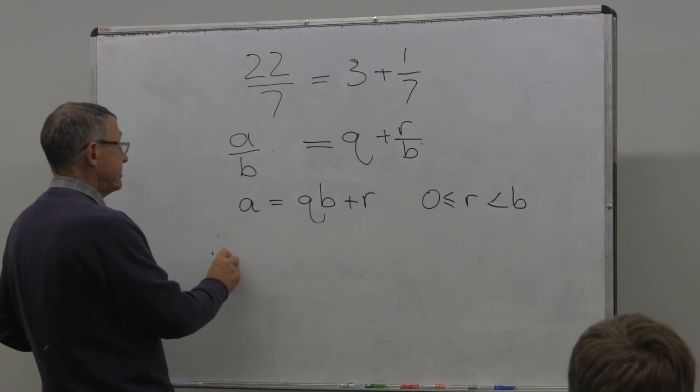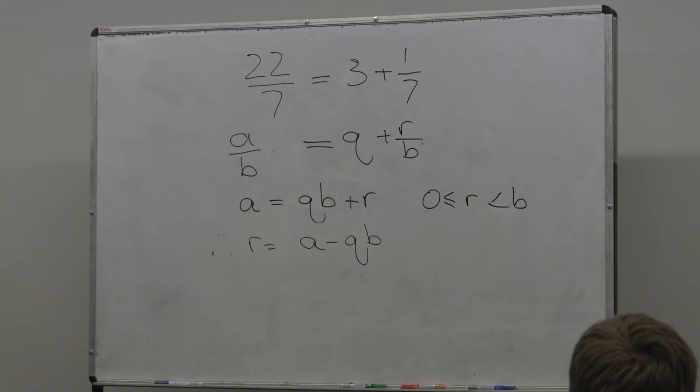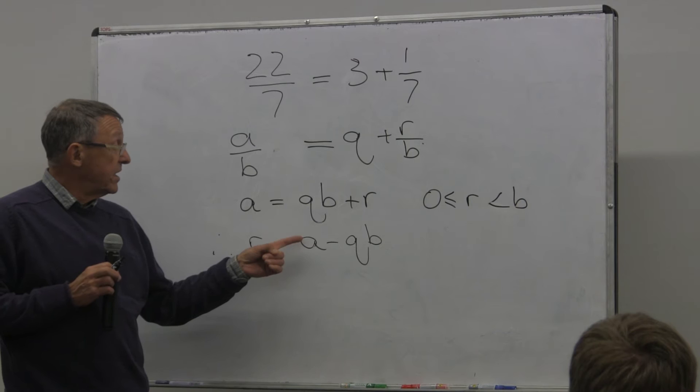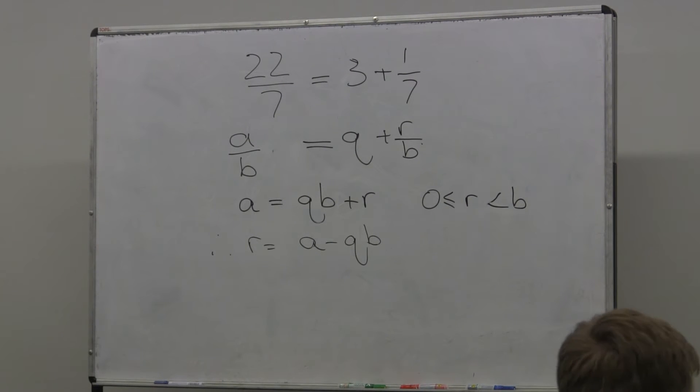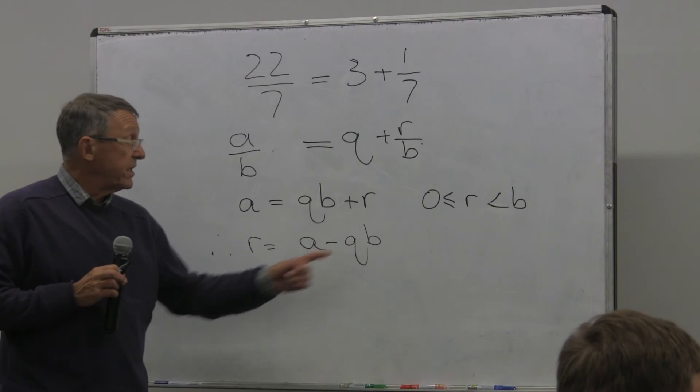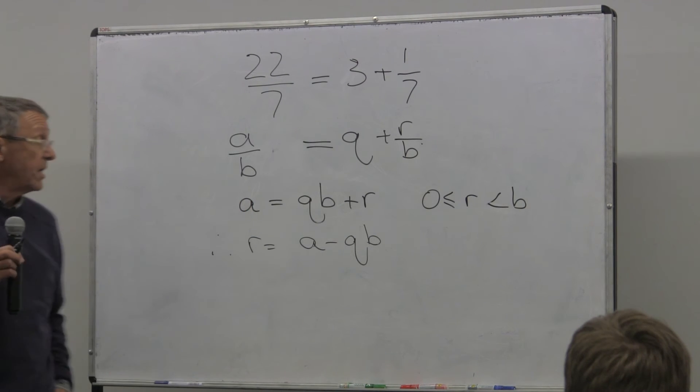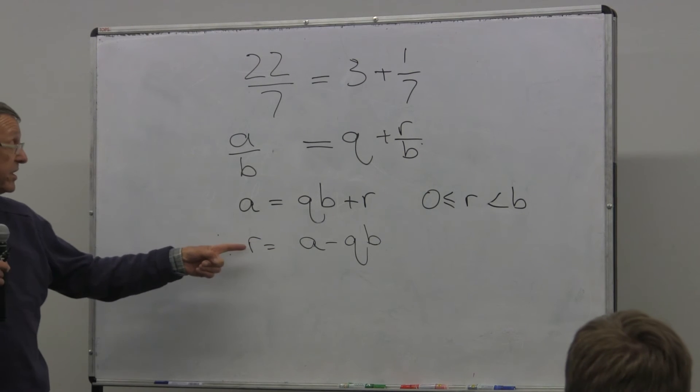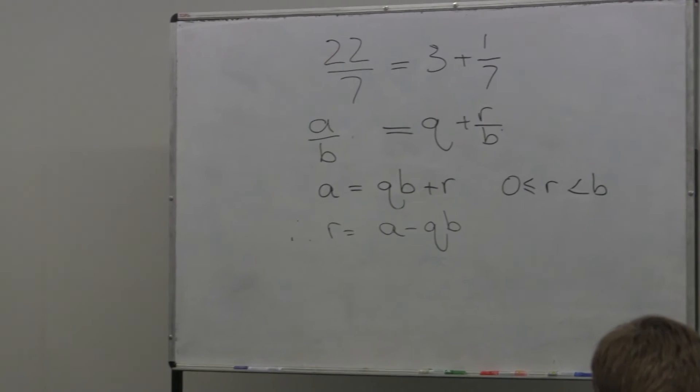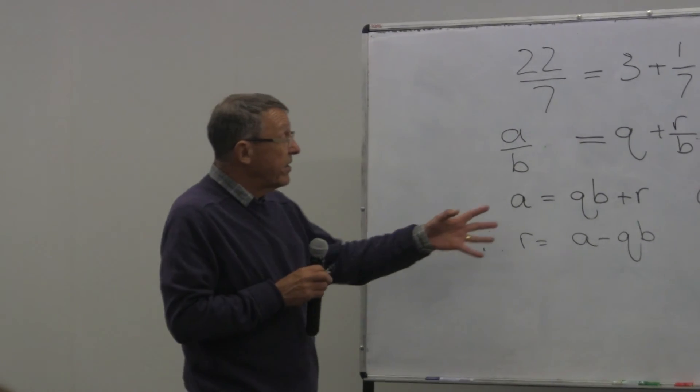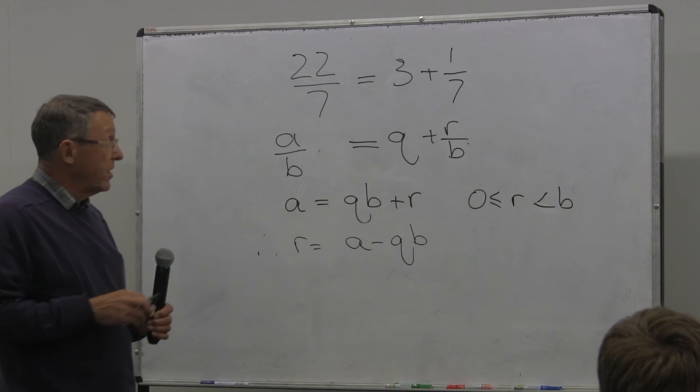But going back to the expression above, we can write R equals A minus QB. That means if you have any divisor of A which is also a divisor of B, then it will be a common factor or common divisor of the right-hand side. And therefore, it will also be a divisor of R. So any common divisor or common factor - please take a copy of those sheets there - any common divisor of A and B will also be a divisor of R. So that means it divides B and R.